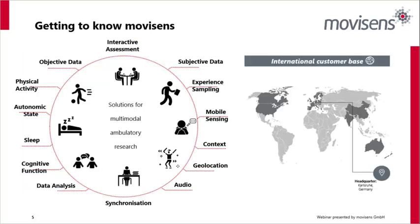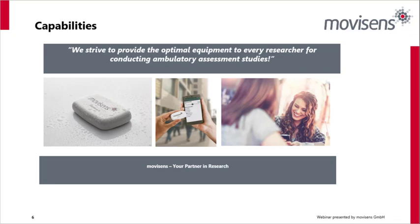The key thing we focus on is understanding the broader context — solutions for multimodal ambulatory research. On one side we have objective data: physiological sensors studying physical activity, autonomic state, sleep, cognitive function, and analysis of that data. On the other side we have subjective data — experience sampling and mobile sensing — getting context from participants as to what the physiological data might mean. We are one of the few companies that can offer completely interactive assessments, having physiological changes of state trigger questionnaires to get additional subjective data, blending and synchronizing the two data sets.